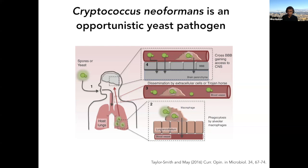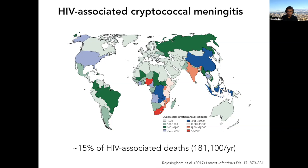Even with treatment, mortality is around 20–30%, in part because of the lack of good antifungals. In individuals who are immunocompromised — lacking T cells — it's a major cause of death. Cryptococcus currently causes about 15% of HIV-associated mortality, estimated at 181,000 deaths per year, much of this concentrated in southern Africa but common wherever there are HIV cases, including the United States.